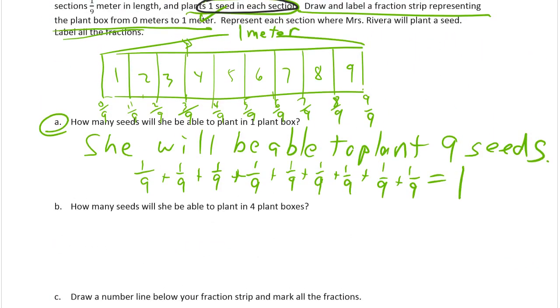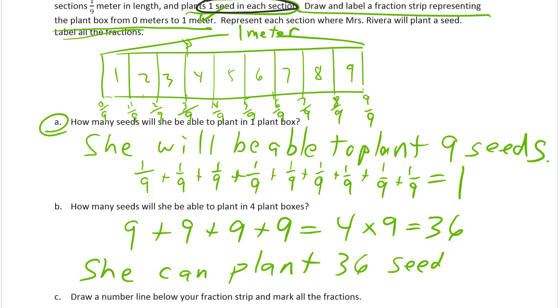How many seeds will she be able to plant in four plant boxes? So if she's got nine in each box and she's got four boxes, then she's adding four nines together, right? And that's the same as four times nine, 36. She can plant 36 seeds.